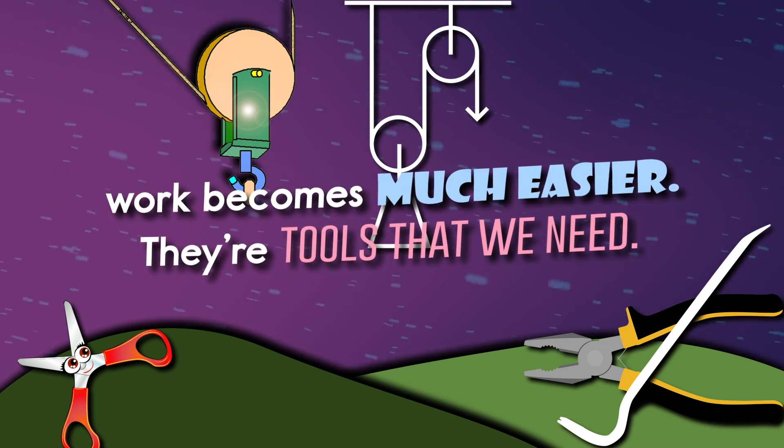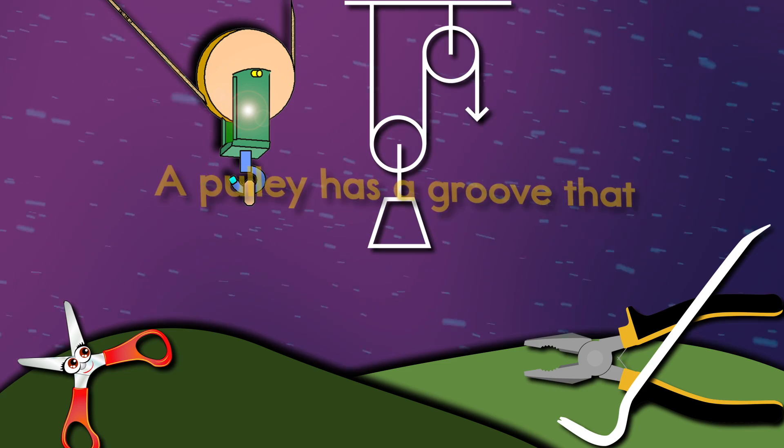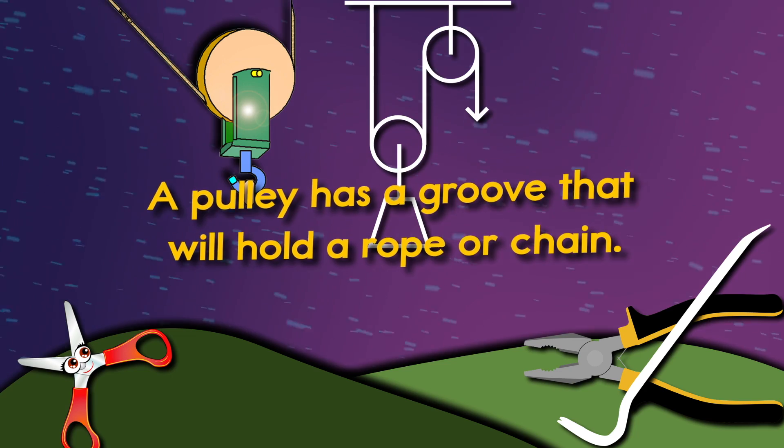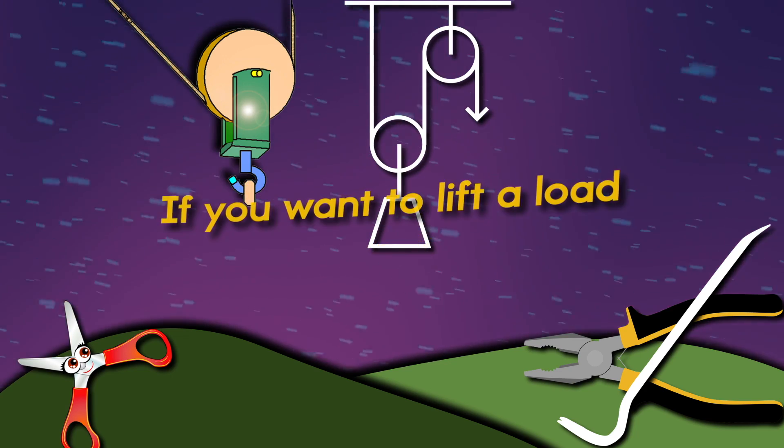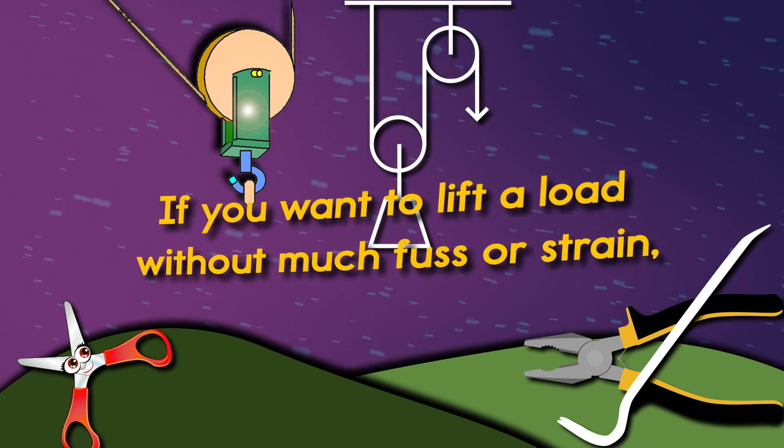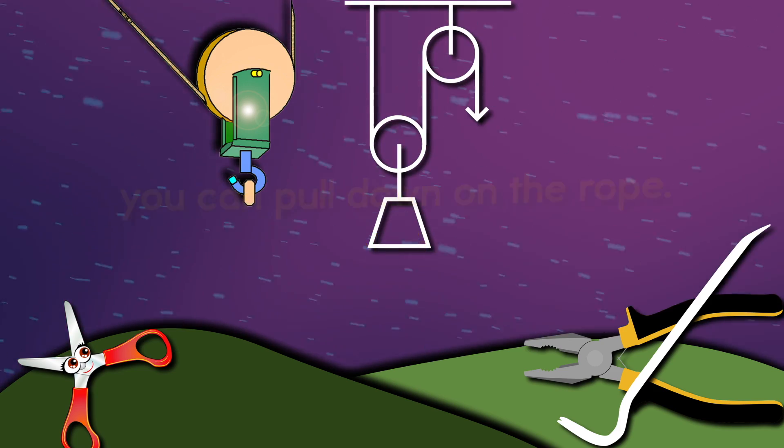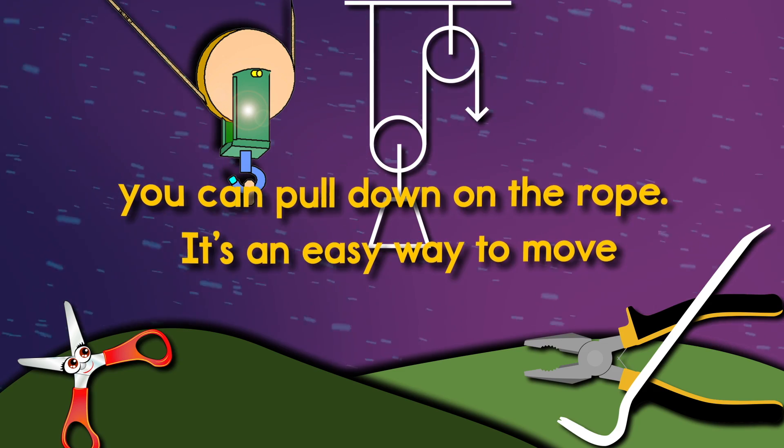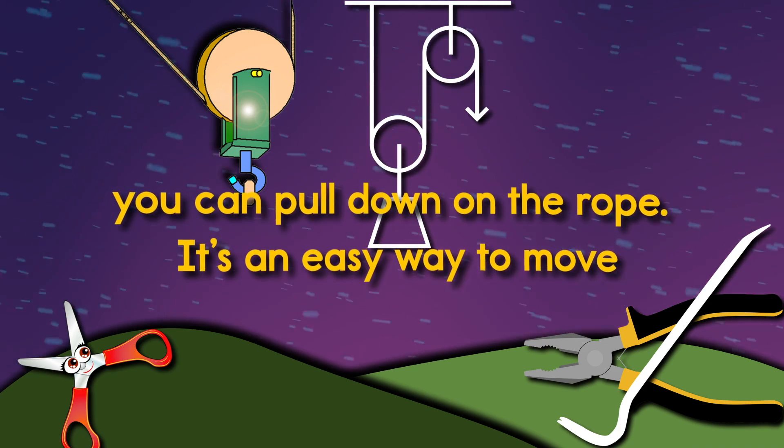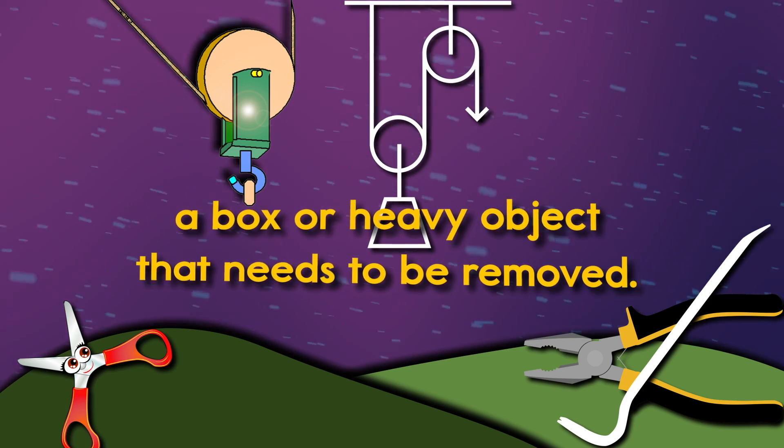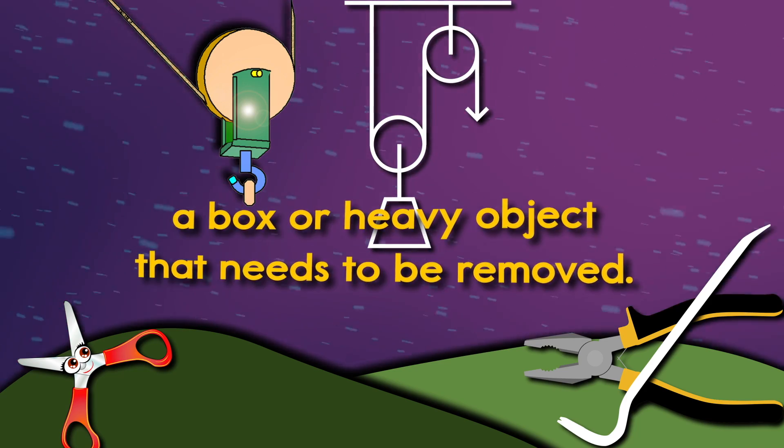work becomes much easier, the tools that we need. A pulley has a groove that will hold a rope or chain. If you want to lift a load without much fuss or strain, you can pull down on the rope, it's an easy way to move a box or heavy object that needs to be removed.